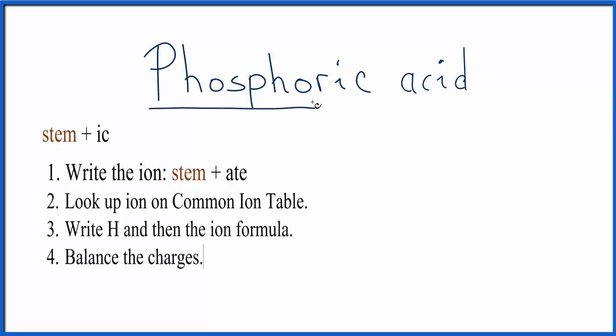Next, instead of having -ic at the end of it, we'll write -ate. So now we know we have something similar to phosphate ion. Let's look that up and see if we have something on the common ion table similar to this word.